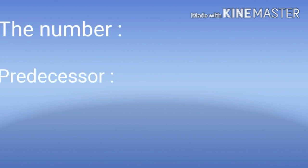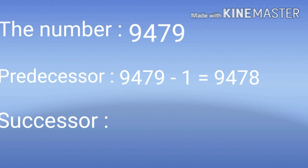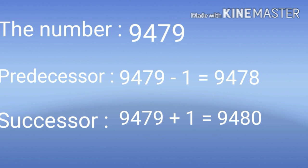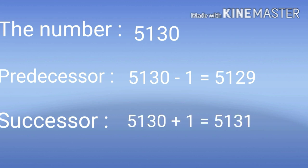Now we have more examples. First one, 9479. So predecessor is equal to 9479 minus 1, that is equal to 9478. Then successor is equal to 9479 plus 1, that is equal to 9480. Next example, 5130. So predecessor is equal to 5130 plus 1, that is equal to 5131.